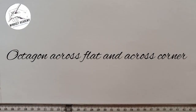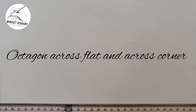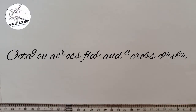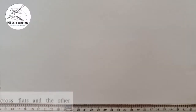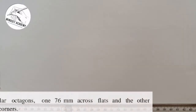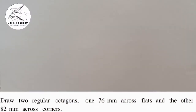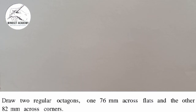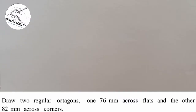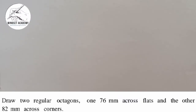Welcome to my channel. In this tutorial we'll be solving a problem in geometric construction that says: draw two regular octagons, one 76 millimeters across flat and the other 82 millimeters across corner. So we have two different octagons.